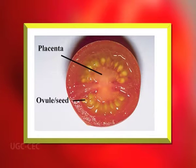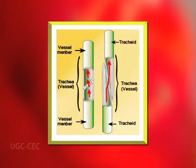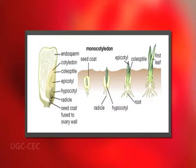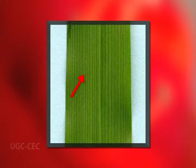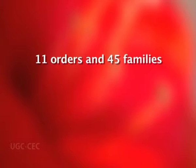The subdivision Angiospermia is based on the characters that ovules are enclosed in the ovary and tracheae or true vessels are present. It is divided into two classes: Monocotyledony and Dicotyledony. The class Monocotyledony is characterized by a single cotyledon, leaves with parallel venation, trimerous flowers, and a stem with closed vascular bundles. It includes 11 orders and 45 families.